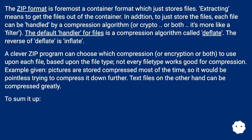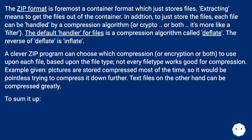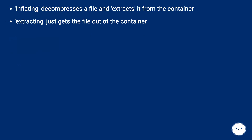The choice is based upon the file type, as not every file type compresses well. For example, pictures are already stored compressed most of the time, so it would be pointless to compress them further. Text files, on the other hand, can be compressed greatly. To sum it up: inflating decompresses a file and extracts it from the container, while extracting just gets the file out of the container without decompression.